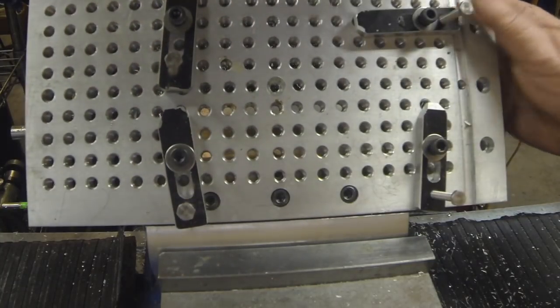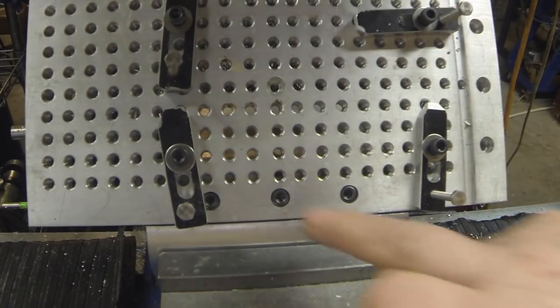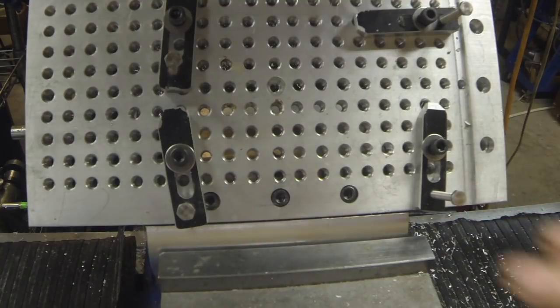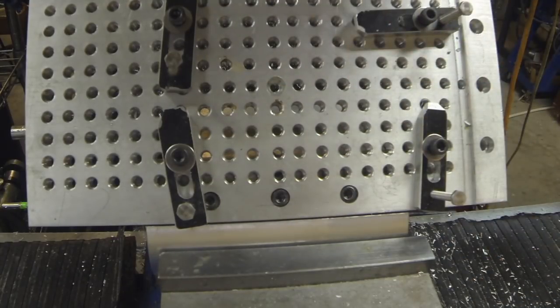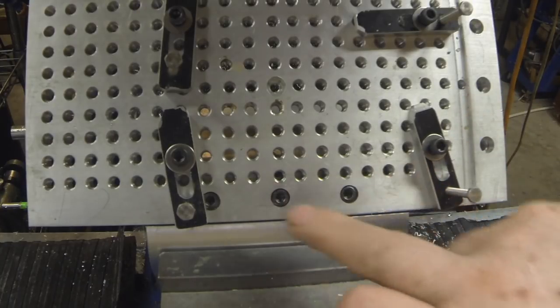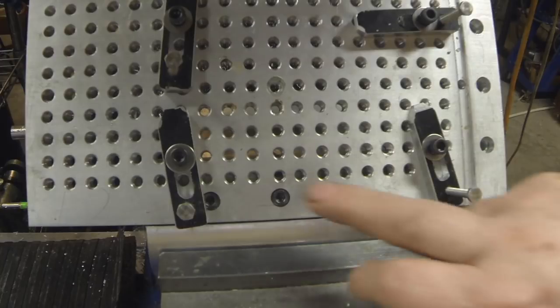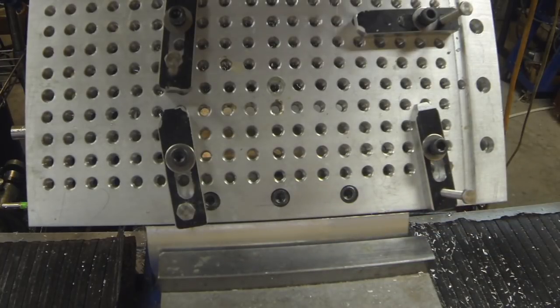I went ahead and mounted it sideways here and that's probably the way I'd use it most of the time. I didn't cut a groove for the fence on this side - at some point I probably will, but for now I'm just gonna leave it the way it is. So that's it, that's my sine plate for the Kurt vise.